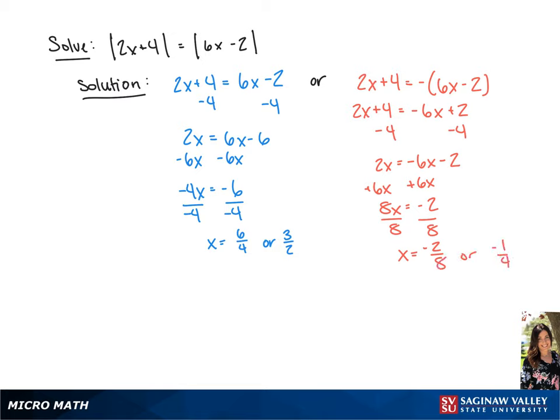So we have two solutions: x equals 3 over 2, or x equals negative 1 fourth.